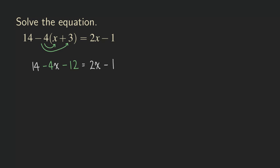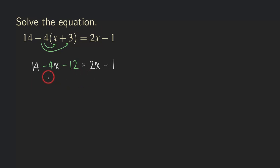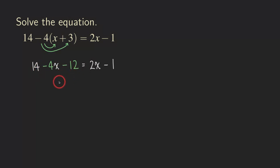And then once you get to the step where there are no more parentheses, we are going to start combining like terms. So if you see that there are like terms — like this one where we have the 14 and then the negative 12 — then we can combine like terms by just taking the 14 minus the 12.